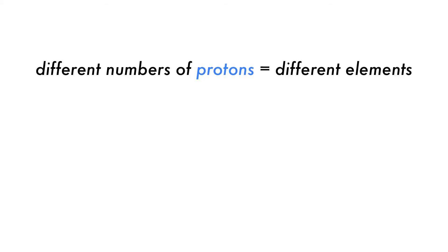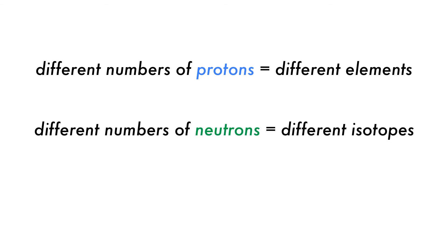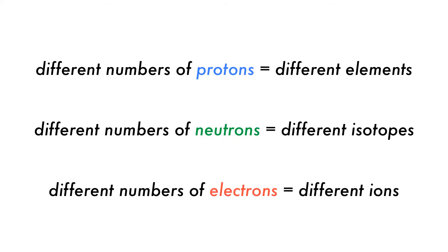In summary, if two atoms differ by number of protons, then they are different elements. If they have different numbers of neutrons but the same number of protons, then they are different isotopes of the same element. And if the number of electrons is different, we have different ions.